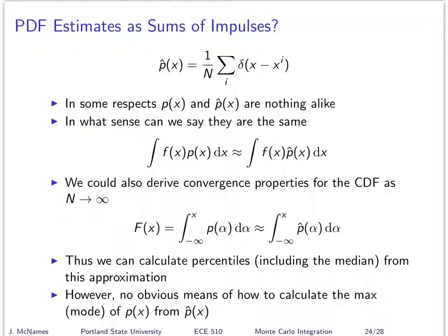And so, you know, in what sense are they the same? In some respects, they're nothing alike. One is very well-behaved, the other is sort of very badly behaved with some really mathematically uncomfortable properties. But they're the same in the sense that if you were to do an integral with the true p(x), or with this approximate p̂(x), they're approximately the same.